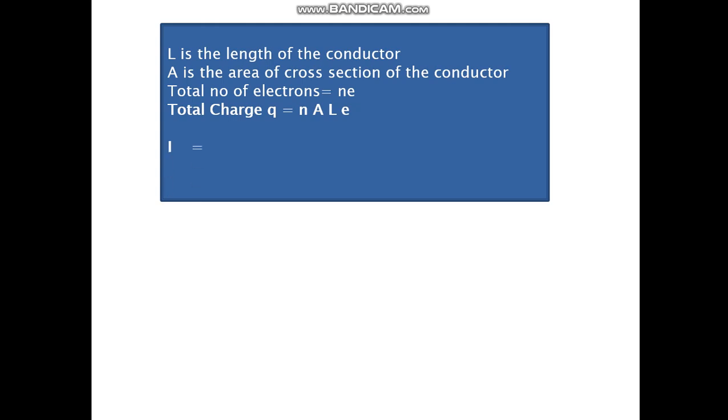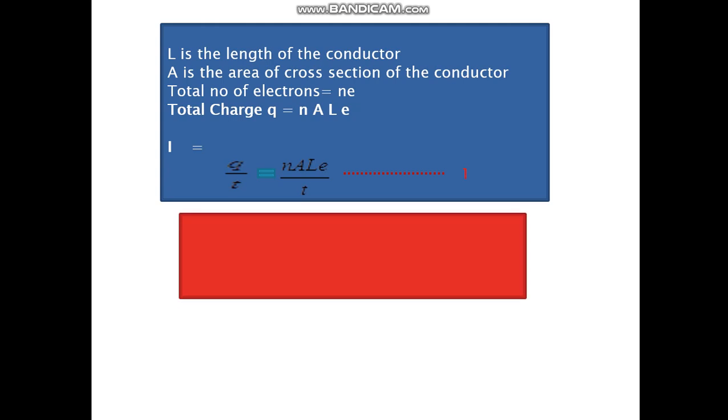So current is nothing but Q by T. So we can write that it has N A L E upon T. Now, you know, if the electrons are moving at random, then the speed is 10 raised to 6 meters per second. But the moment you apply an electric field, the movement of the electron gets restricted and the speed reduces to 10 raised to minus 4 to 10 raised to minus 5 in case of conductors. That's how slow it becomes. And this is known as the drift speed VD.